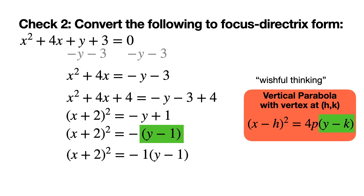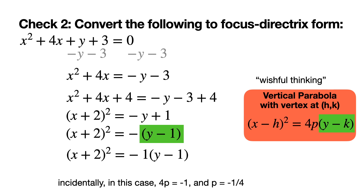Another way to view this: negative one is the number factored out, and both versions are acceptable forms of focus-directrix. Normally you'd leave the negative one written as just a negative in front. In this case 4p equals negative one, and if you need the focal distance p, you solve that equation to find p equals negative one-fourth.